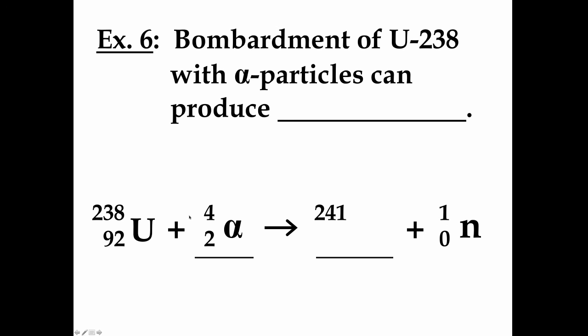238 plus 4 is 242 for our starting mass. 1 is the mass of the neutron. That must mean the other particle must have a mass of 241, so that totals to 242. And then, similarly, it must have a charge of 94, which is equal to 92 plus 2, because the neutron has zero charge, and that is the element plutonium. So, it turns out that when we bombard uranium-238 with alpha particles, we can actually make the artificially created element plutonium, and it also gives off a neutron as well.